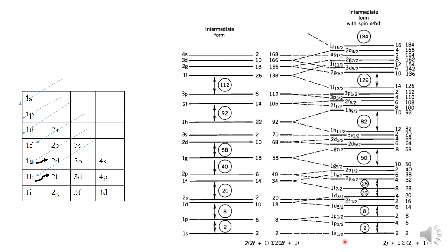Each level can contain 2(2j+1) nucleons. Thus 1s₁/₂ contains 2, 1p₃/₂ contains 4, 1p₁/₂ contains 2, 1d₅/₂ contains 6, 1d₃/₂ contains 4, 2s₁/₂ contains 2, 1f₇/₂ contains 8, and 1f₅/₂ contains 6. There is some interpenetration of levels visible in this scheme.